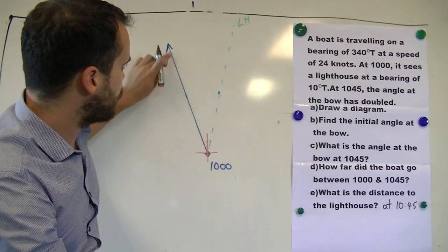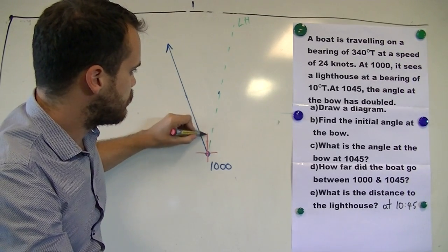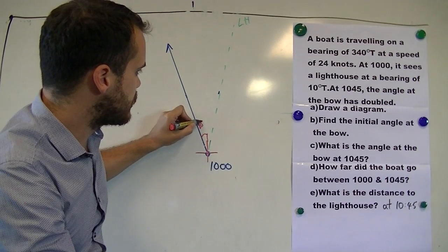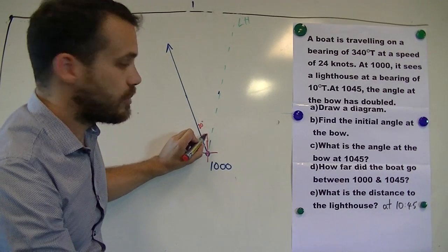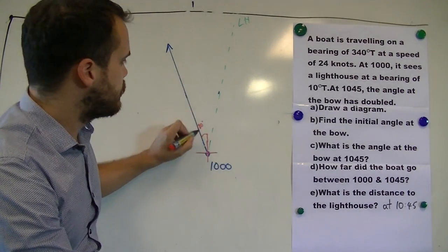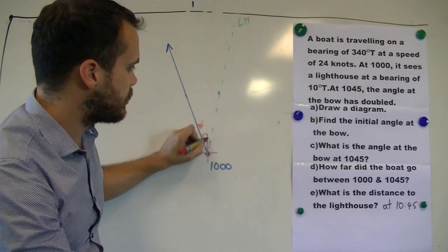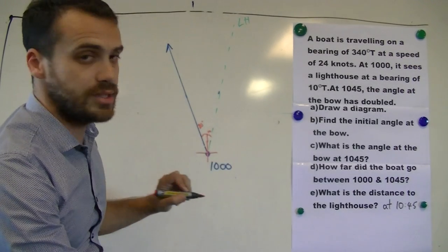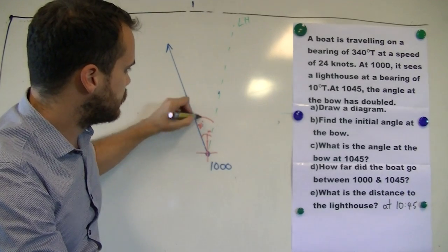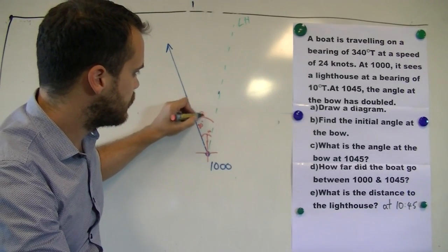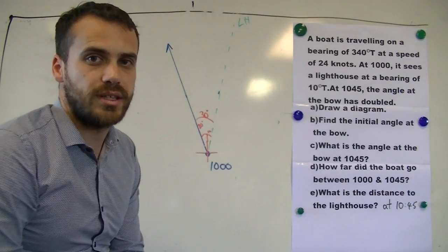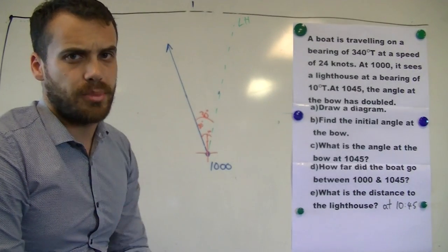Now that's pretty easy for us to figure out. Now remember this is a bearing of 340 degrees, which means that that's going to be 20 degrees in there. And remember this is a bearing of 10 degrees, which means that that's 10 degrees in there. That means that this whole angle is 20 plus 10, it's 30 degrees in there. That's our angle at the bow.